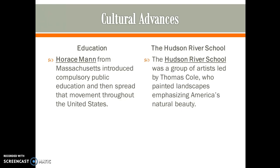Other cultural advances during this period included Horace Mann of Massachusetts introducing compulsory public education, meaning all children would have to go to school. He spread this movement throughout the United States by founding teacher education schools to train teachers. The Hudson River School was also important during this time as the first nationalist art movement, depicting the natural landscape of the United States. The group was led by Thomas Cole, who painted landscapes emphasizing America's natural beauty.